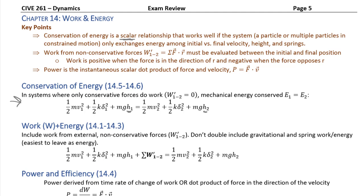The height h is always measured above a vertical datum, so h is positive above the datum, negative below the datum, and zero at the datum. That is the only directional term. All the remaining terms are positive no matter what, because velocity gets squared and delta — the displacement of a spring from neutral — also gets squared in this equation.